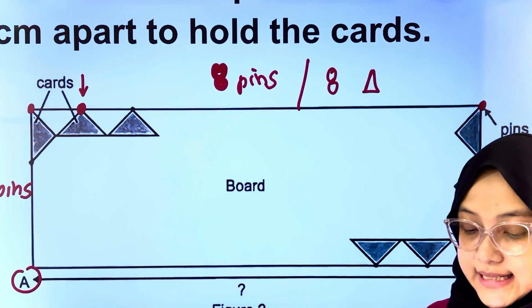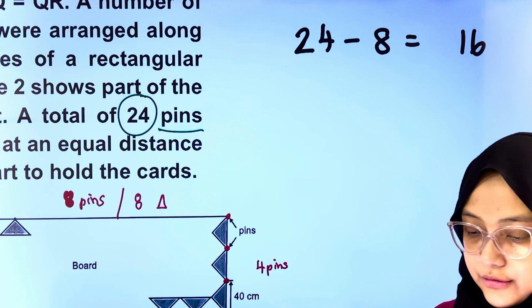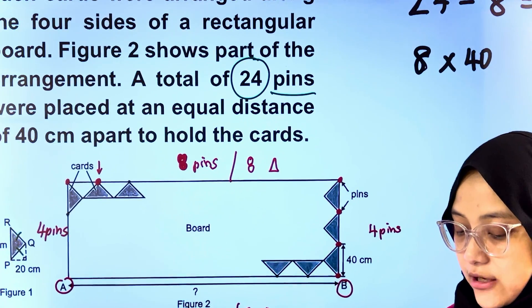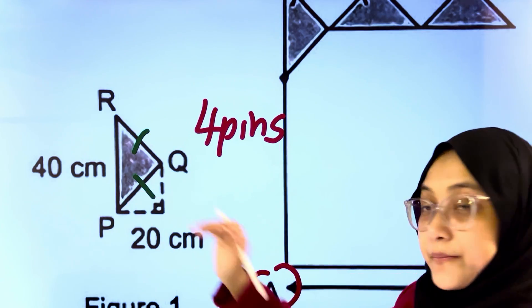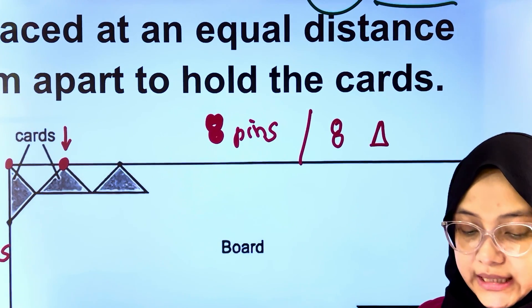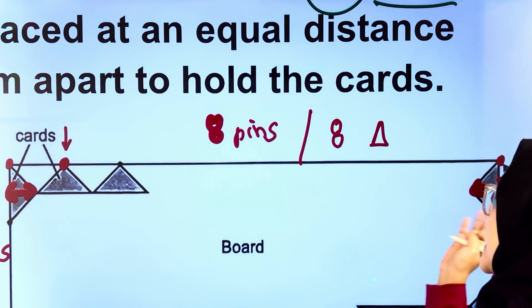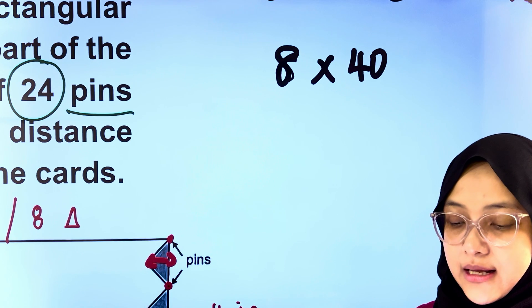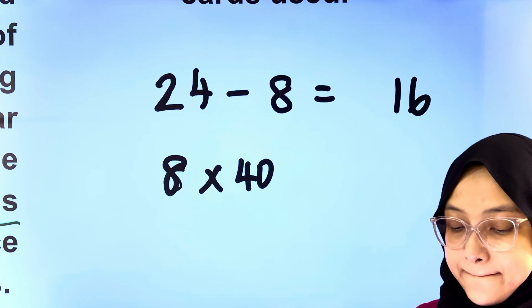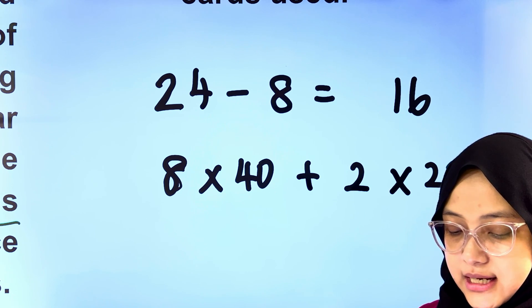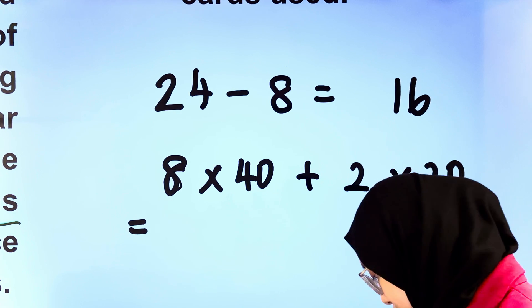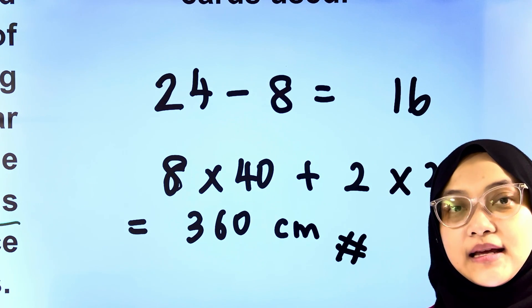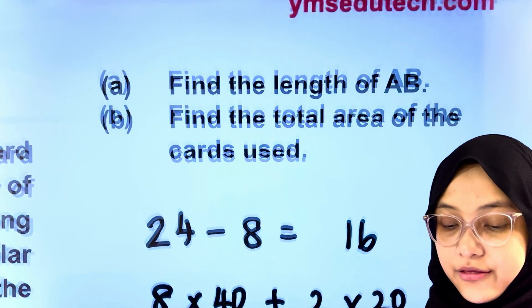Therefore, the length of AB consists of 8 multiplied by 40 because the base of the cut is 40 cm, which has a dimension of 20 cm. Hence, the length of AB is 8 multiplied by 40 plus 2 multiplied by 20. Key this into the calculator. You should get 360 cm. This is the answer to part A, the length of AB.